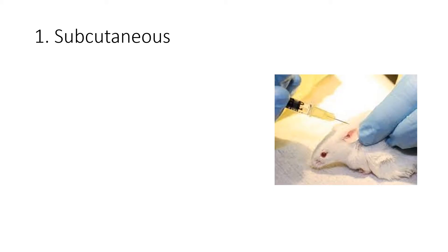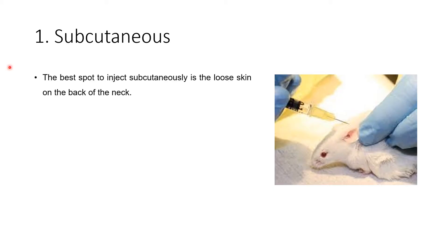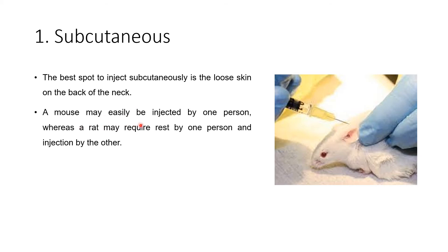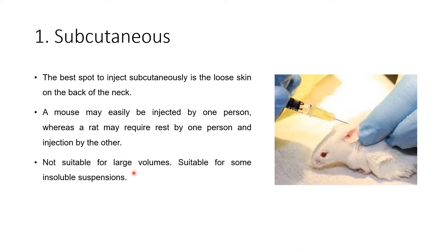Now we will see some important parenteral routes of administration. The first is subcutaneous. The best spot to inject subcutaneously is the loose skin on the back of the neck. A mouse may easily be injected by one person, whereas a rat may require restraint by one person and injection by another, since the rat is comparatively bigger than the mouse. This route is not suitable for large volumes but is suitable for some insoluble suspensions.